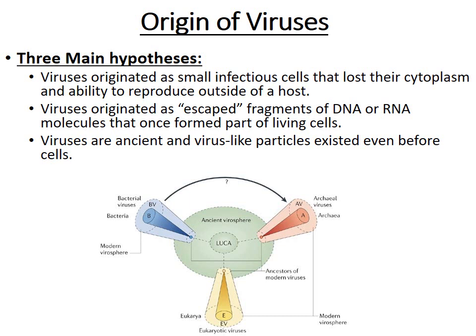Where do viruses come from? There are three main hypotheses. First, they may have been small infectious cells that lost their cytoplasm and the ability to reproduce without a host. Second, they may have been escape fragments of DNA or RNA molecules that were once part of living cells and eventually became infectious molecules. Third, viruses may have existed prior to cells — as virus-like particles before the first living cell ever existed.